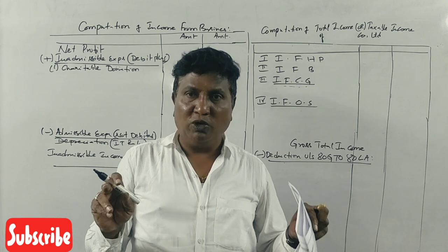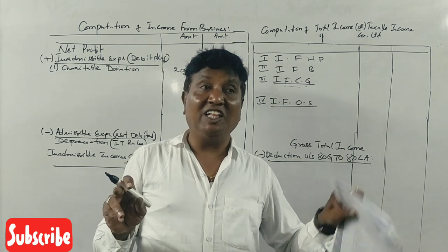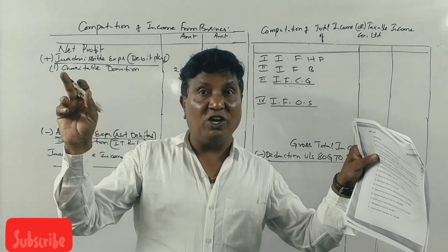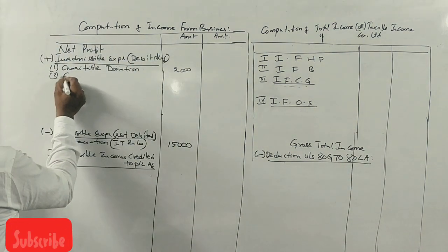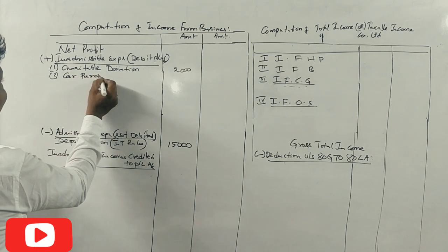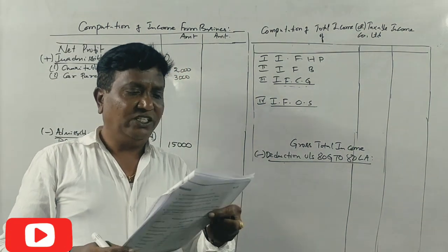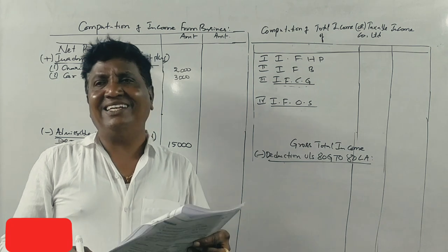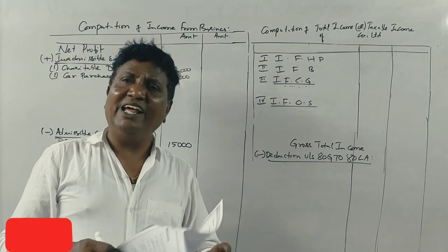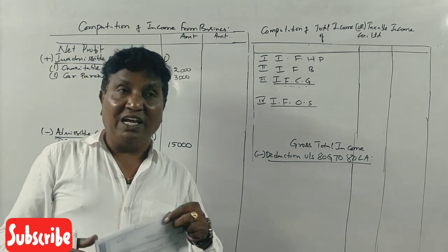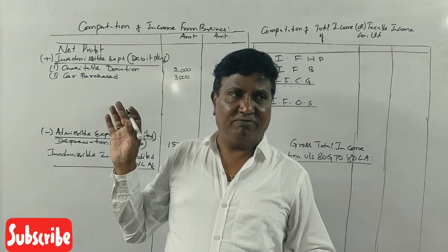These are business expenses. However, the capital expenses for car purchase are inadmissible — that is a capital expense, not a revenue expense. Miscellaneous repairs are a business expense, but if they relate to house property they go under that head and are inadmissible here.